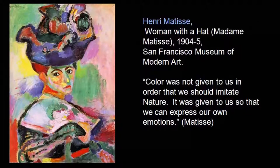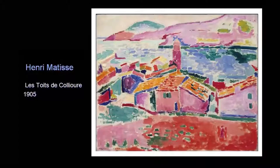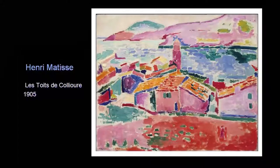Look at this painting by Henri Matisse titled Woman with a Hat, painted in 1904 and 1905. As Matisse himself said, colour was not given to us in order that we should imitate nature — it was given to us so that we can express our own emotions. For Matisse and all Fauvist painters, colour is not something preconceived or pre-mediated, something already given that the artist is there only to follow.